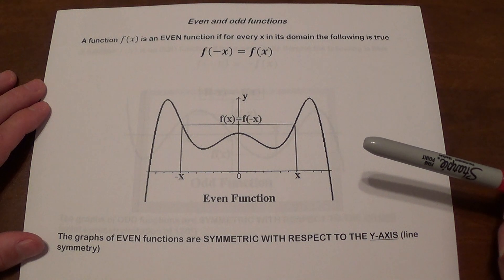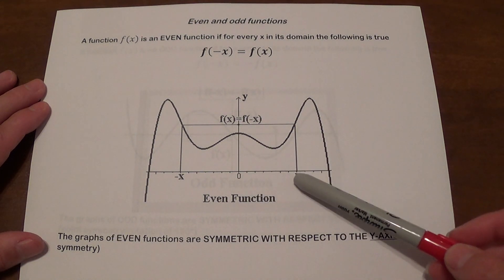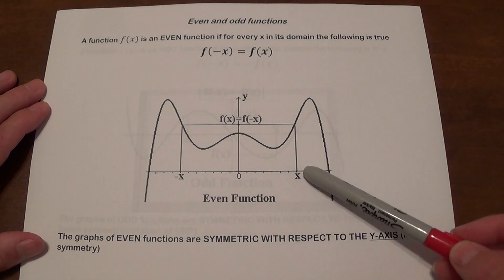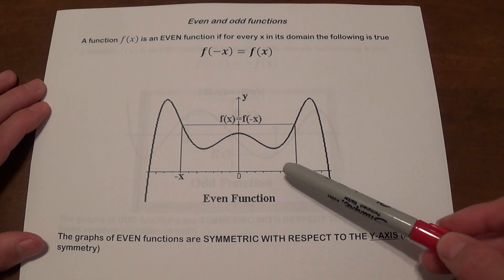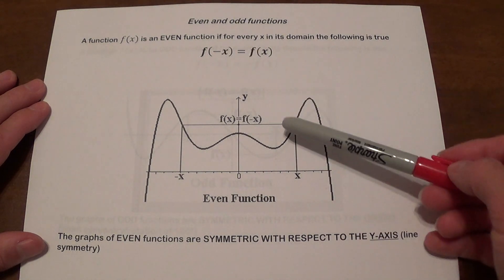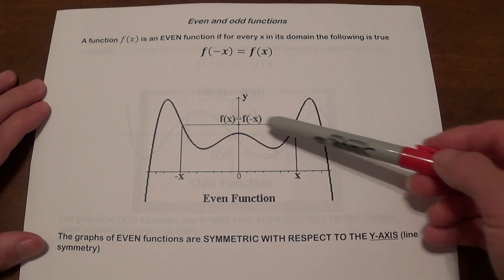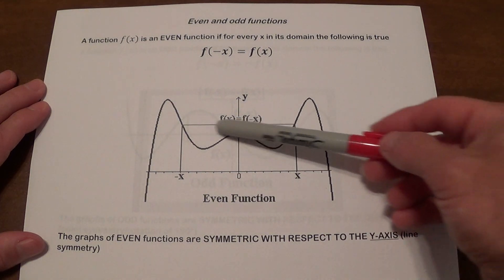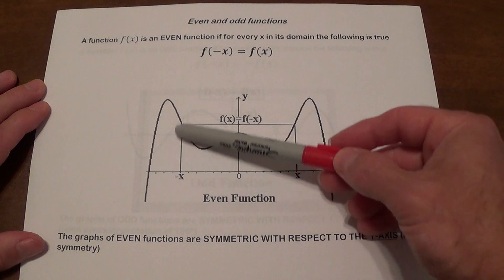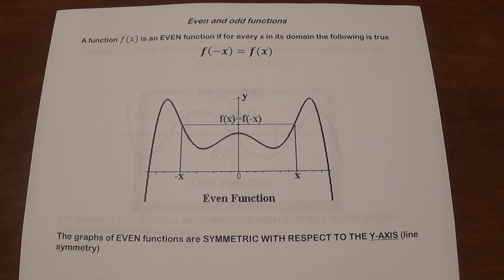What does it mean on the graph? If you think about x being some value on the x-axis, and negative x will be the opposite of it — that means if you use two opposite values and evaluate the function at those two points, the function's value is actually going to be the same. So this is what f of x is, this is what f of negative x is. They are the same, so this function is going to be even.